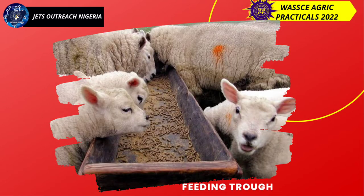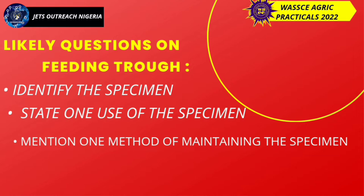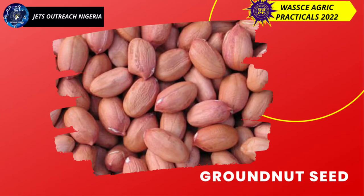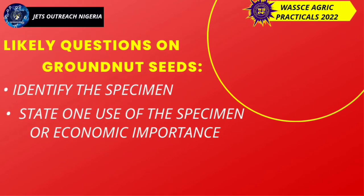Next is the feeding trough. Likely questions: identify the specimen, state one use of the specimen, mention one method of maintaining the specimen. Your answers are: the feeding trough is used for feeding animals and can be maintained by regular cleaning. Next, groundnut seeds. Identify the specimen, state one use. Your answer: groundnut seeds are raw materials for oil production.